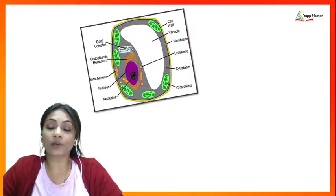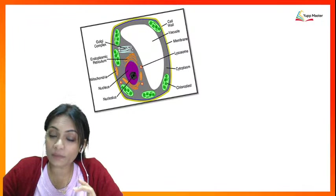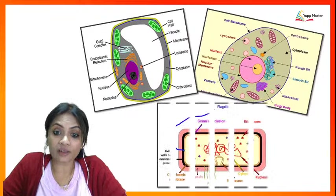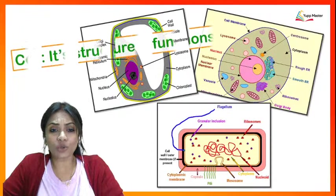We're going to be talking about all the different types of cells. When we talk about any one part, we can also identify whether that cell organelle is present in an animal cell or present in a plant cell. There are other types of cells which we are going to be studying today, like that of a prokaryotic cell.